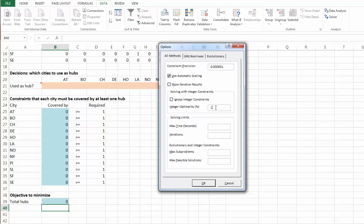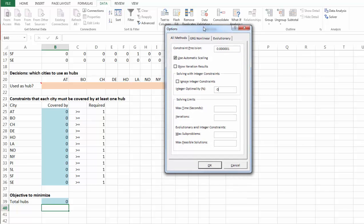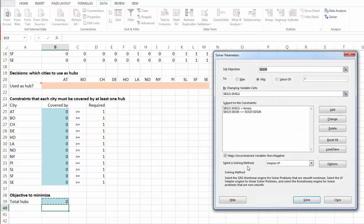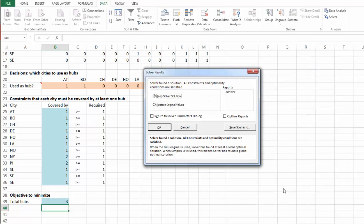Once again, we are going to change integer optimality setting to 0. That way, we can guarantee our optimal solution will be found. OK. Let's solve. Keep our solver solution.